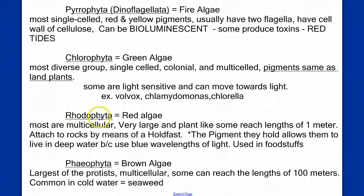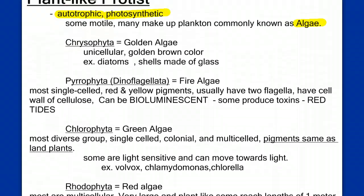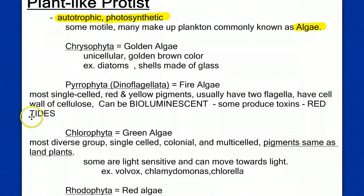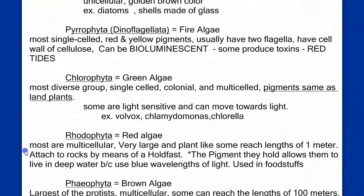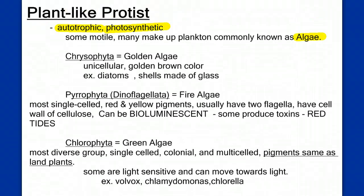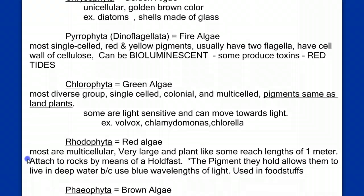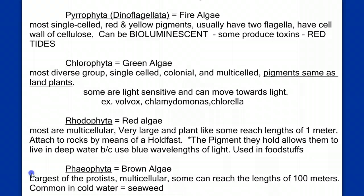At first these names look like a foreign language, but they all end in the same root 'phyta,' and the first part is different — chryso, pyro, chloro, rhodo, phaeo. We just need to learn what those prefixes mean. Each has a common name: chrysophyta — golden algae; pyrrophyta — dinoflagellates or fire algae; chlorophyta — green algae; rhodophyta — red algae; phaeophyta — brown algae.